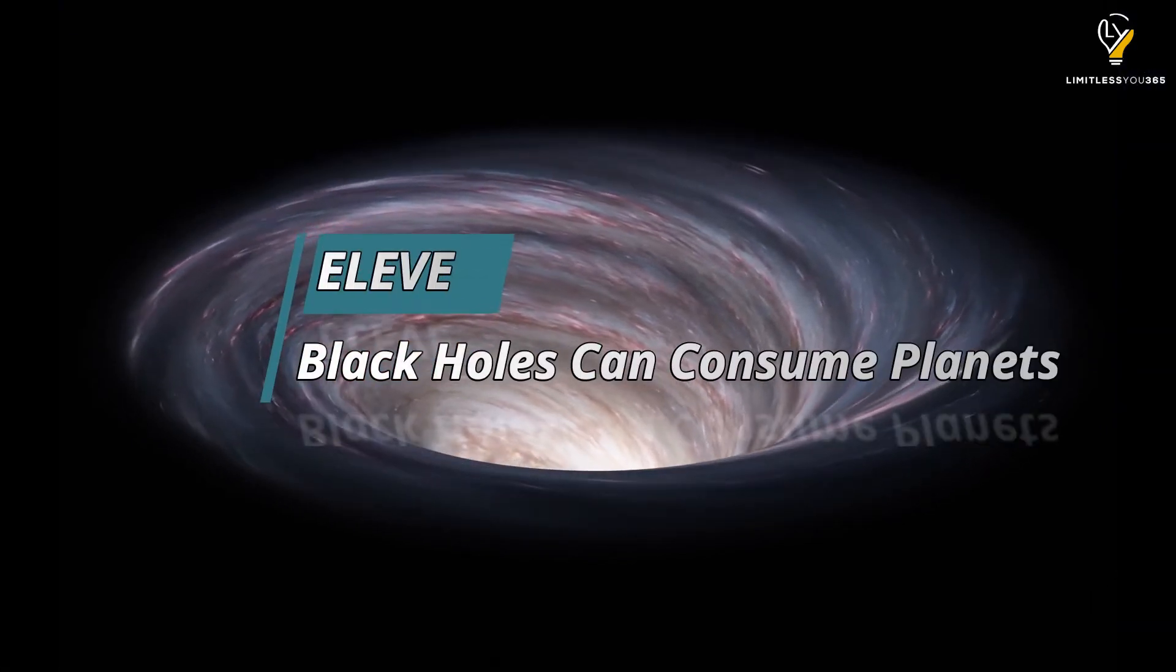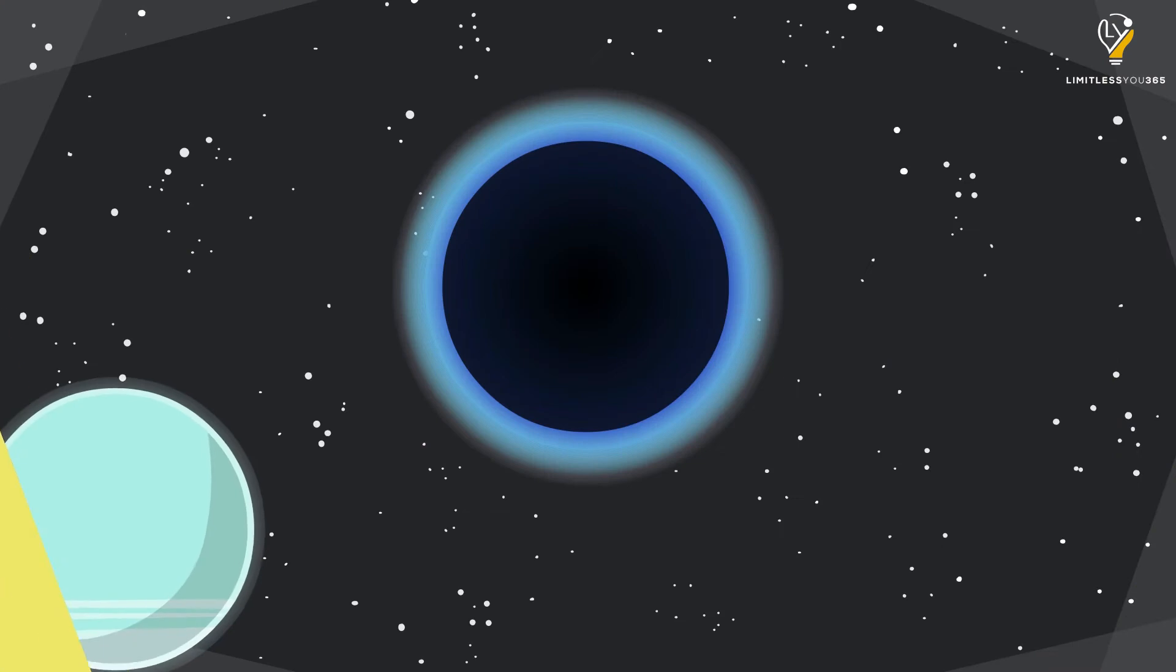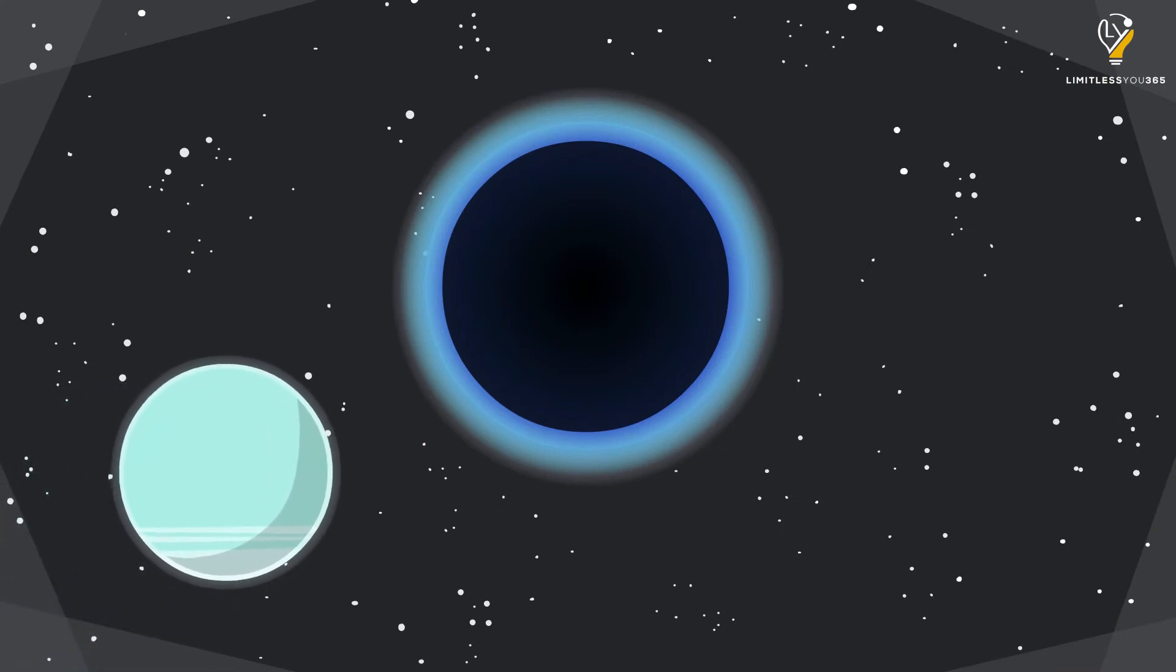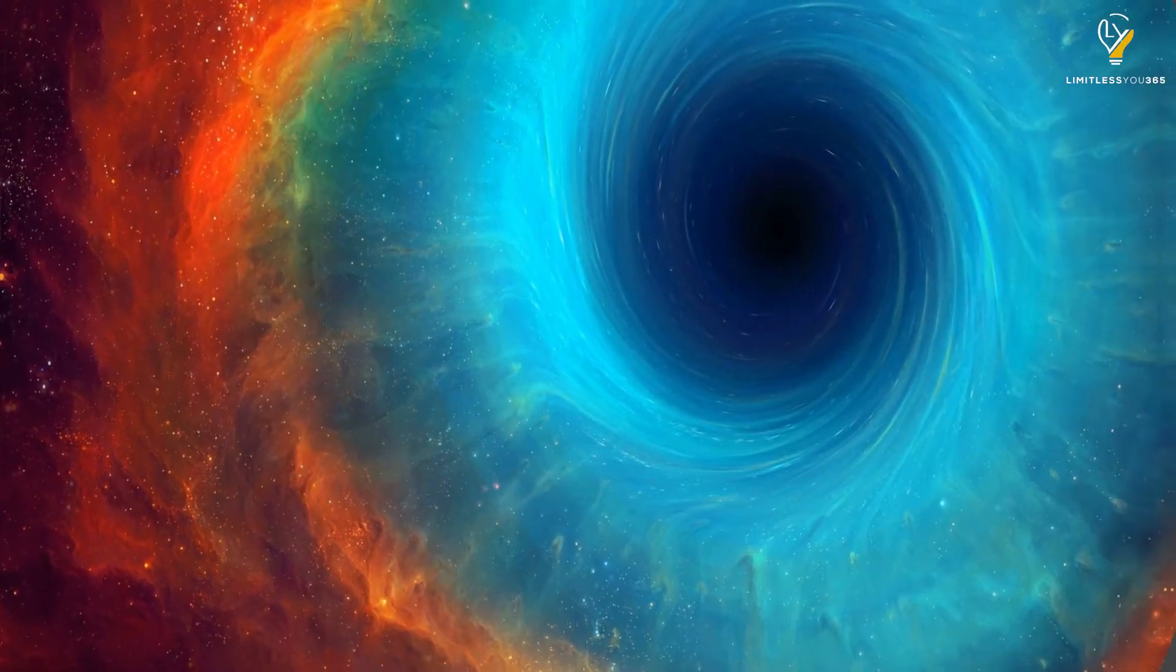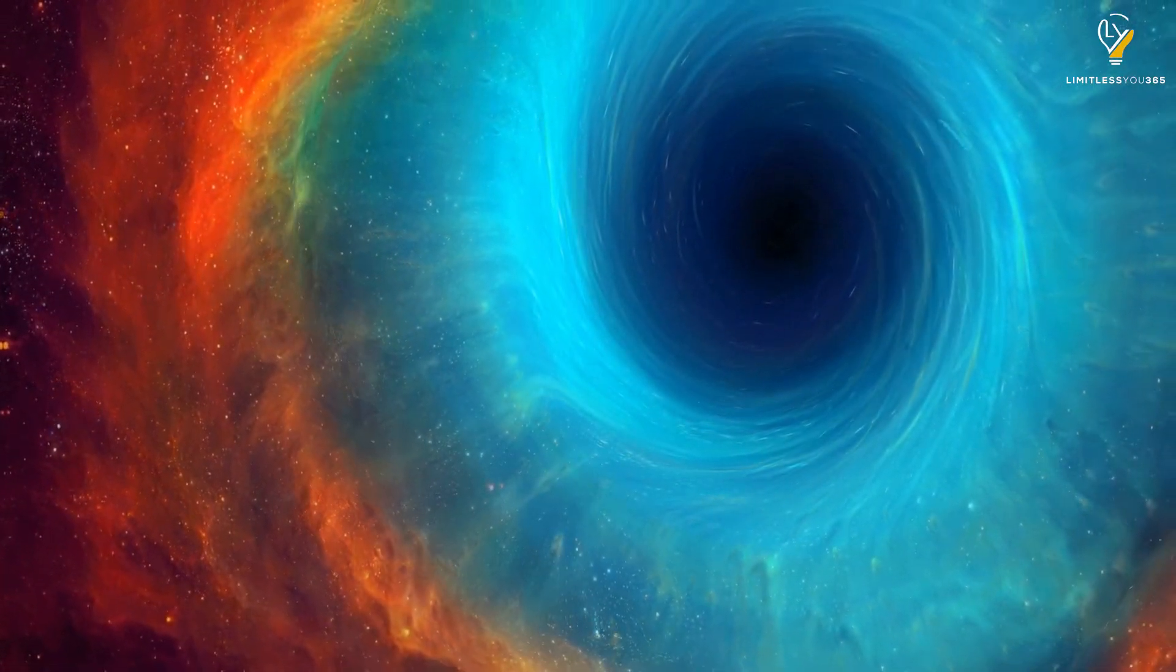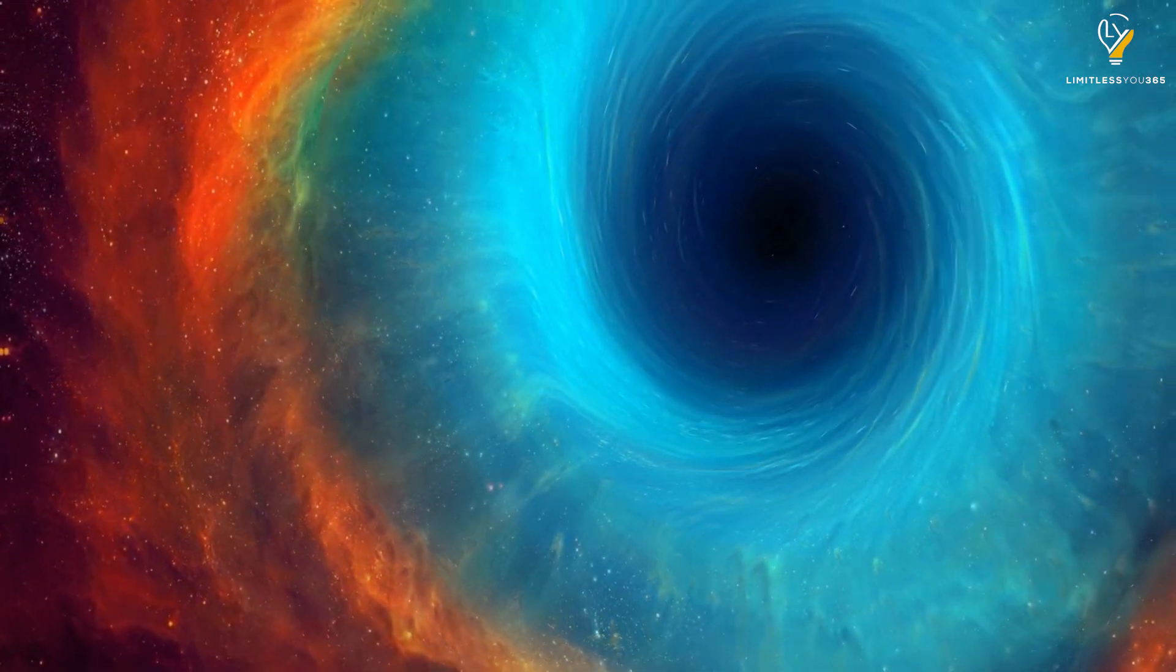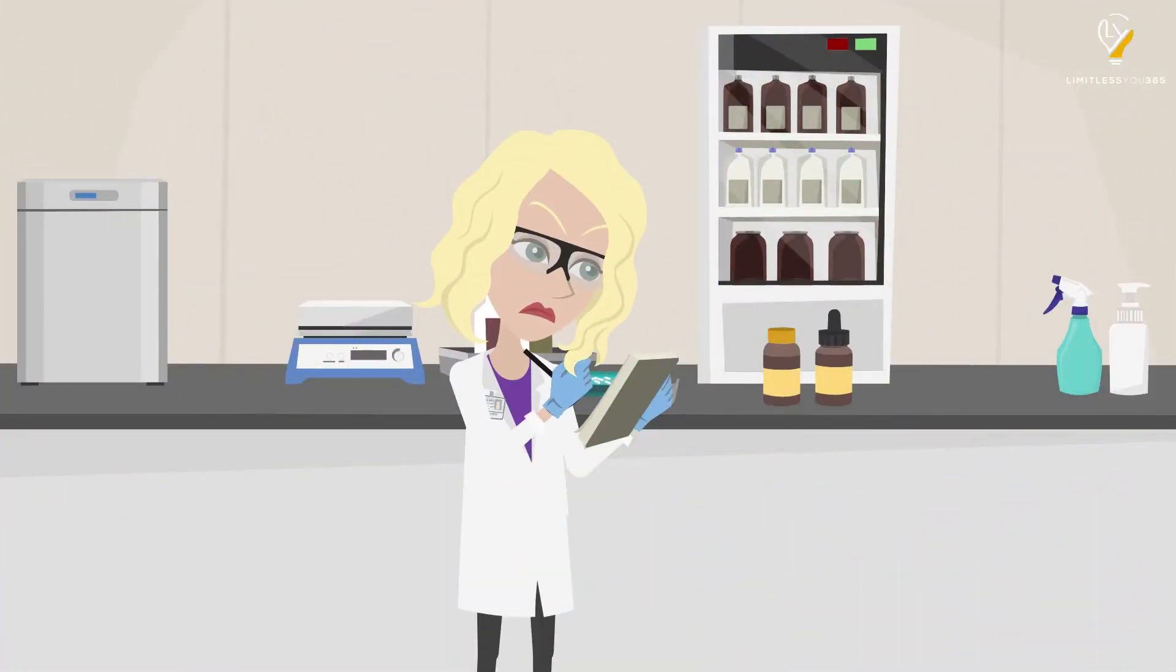Number eleven: Black holes can consume planets. We all know about black holes, those mysterious and scary objects in space that suck everything in. Well, it turns out they're not just limited to sucking in light and small objects. They can also consume whole planets. In fact, scientists believe that there are billions of black holes scattered throughout the universe. Pretty scary, right?